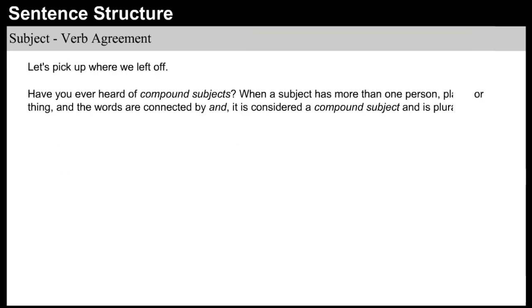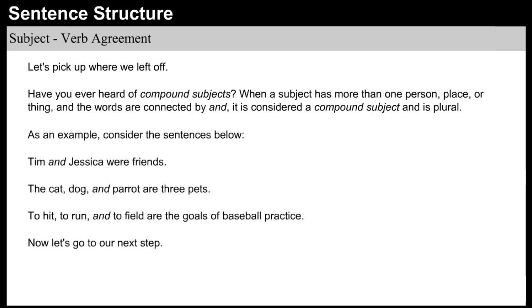Have you ever heard of compound subjects? When a subject has more than one person, place, or thing, and the words are connected by and, it is considered a compound subject and is plural. For example: 'Tim and Jessica were friends.' 'The cat, dog, and parrot are three pets.' 'To hit, to run, and to field are the goals of baseball practice.'